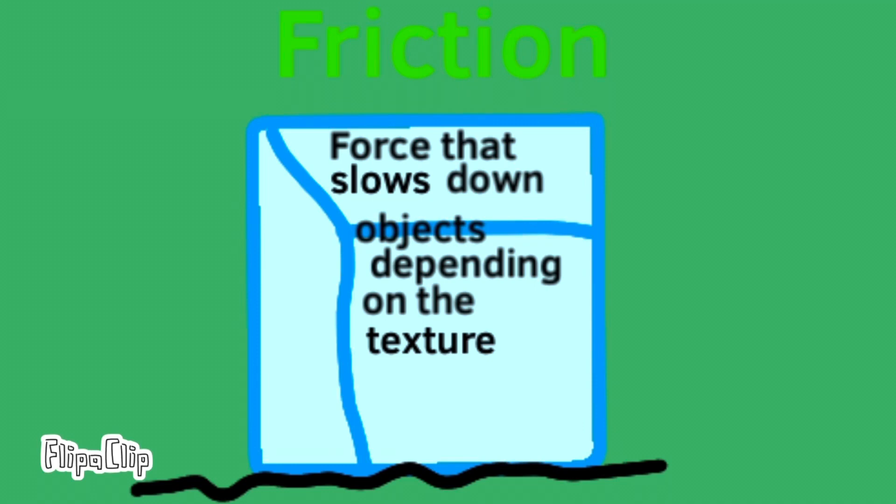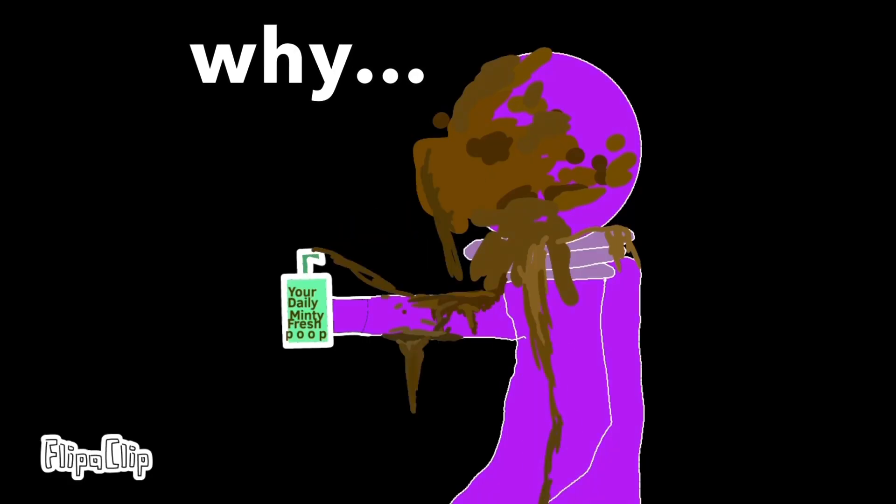Friction is a force that slows down objects, depending on how rough the texture is. Like how this poor guy had to grab it. He couldn't have done it without friction.